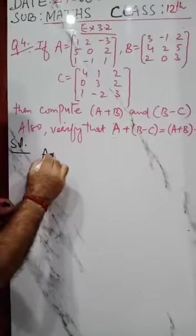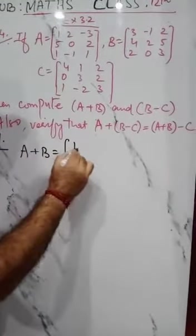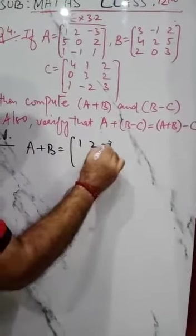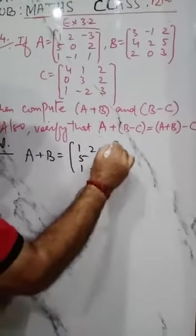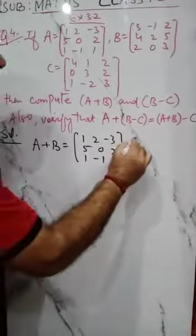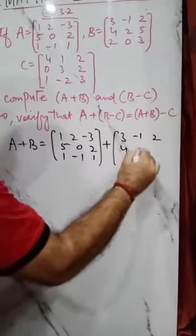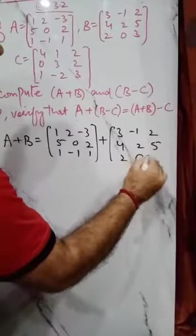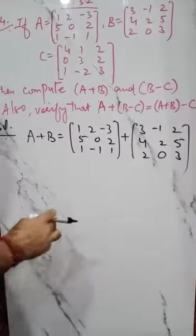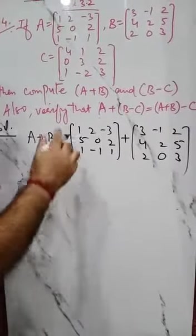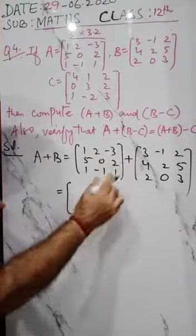A plus B: matrix A has entries 1, 2, minus 3 in the first row, and the entries of B are 3, minus 1, 2 in the first row, 4, 2, 5 in the second row, and 2, 0, 3 in the third row. So this is a square matrix of order 3 by 3.